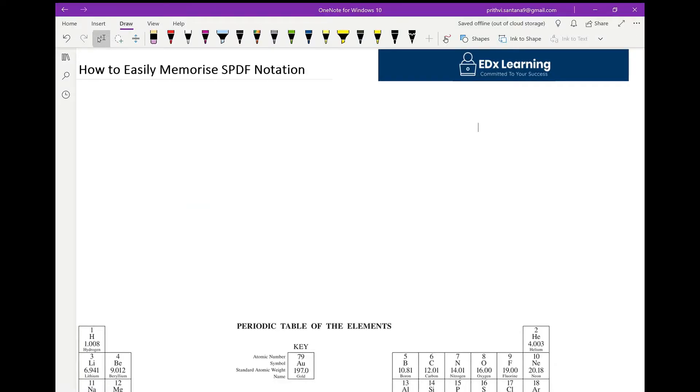In this lesson we'll go through how to easily memorize SPDF notation and quickly apply it to a question. SPDF notation refers to the arrangement of electrons within a principal energy level and it's determined by Aufbau's rule. Aufbau's rule simply states that electrons will fill from the lowest energy orbital to the highest energy orbital, and that so happens to be in this following order.